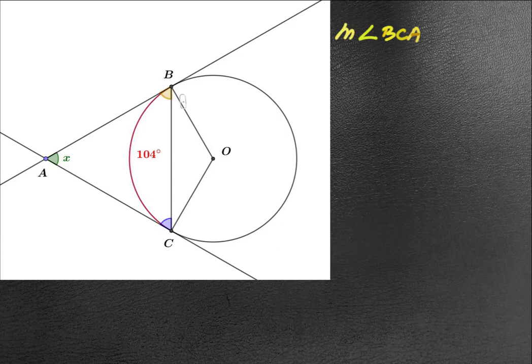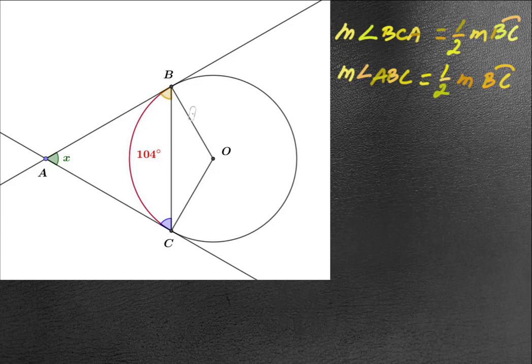angle BCA at C is equal to half of the intercepted arc BC. And similarly, we can say measure of angle ABC at B is equal to half of intercepted arc. But one thing we know is for the